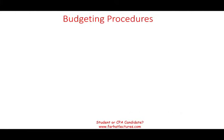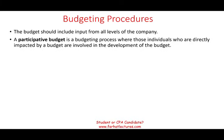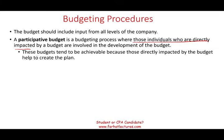Now, the budgeting procedures — how do we set a budget? The budget should include input from all levels of the company: top managers, medium, and low-level managers. This is called a participative budget, where all individuals directly impacted by a budget are involved. Rather than just imposing the budget on them, you let everybody get involved. Research shows that's a better way of building a budget. Participative budgets tend to be achievable because people bought in and participated — it was not imposed on them.